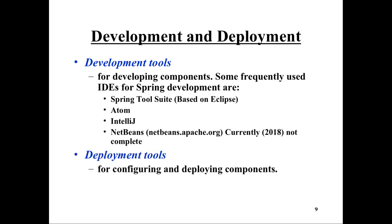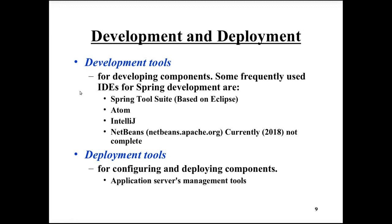We also need a deployment tool. The deployment phase means making the container aware of the component so it can instantiate and invoke it when needed. There are two main choices: either keep a long-running application server and use its deployment and management tools to configure and update the application, or package the entire application server, its containers, the application, and all configuration files into one unit and deploy that in a cloud environment, using tools like Docker and Kubernetes to manage different nodes and spinning up a new server for each update.